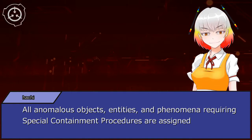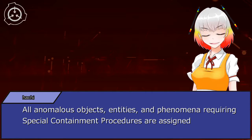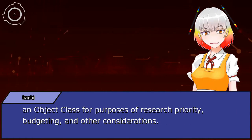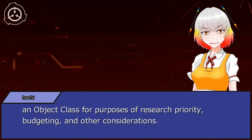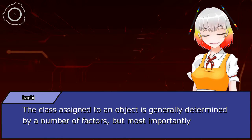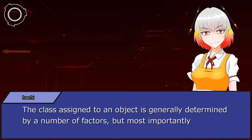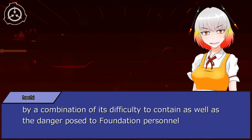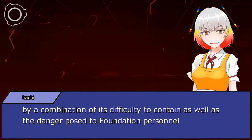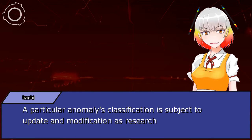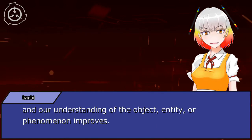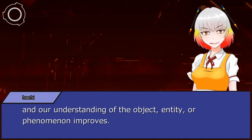All anomalous objects, entities, and phenomena requiring special containment procedures are assigned an object class for purposes of research priority, budgeting, and other considerations. The class assigned to an object is generally determined by a number of factors, but most importantly by a combination of its difficulty to contain as well as the danger posed to Foundation personnel and humanity at large. A particular anomaly's classification is subject to update and modification as research and our understanding of the object, entity, or phenomenon improves.